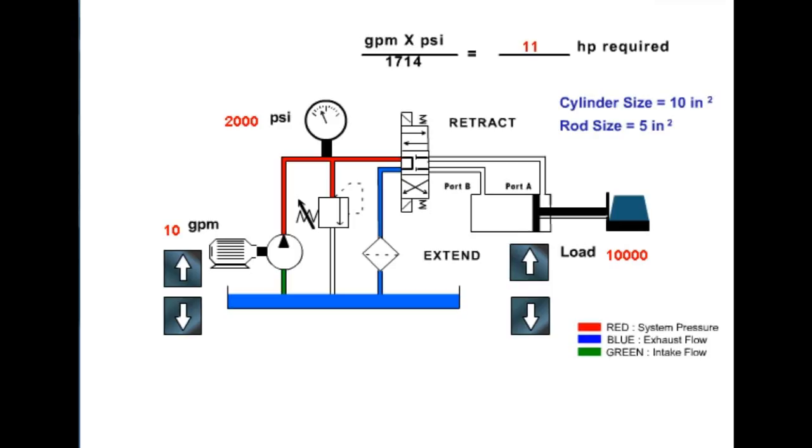This learning lab will demonstrate the effect of flow and pressure requirements on theoretical input horsepower required. Clicking on the arrows labeled GPM will increase or decrease the pump flow output, while clicking on the arrows labeled Load will increase or decrease the load on the cylinder. Clicking on Extend or Retract will shift the valve and operate the circuit. Observe the changes in horsepower requirements.